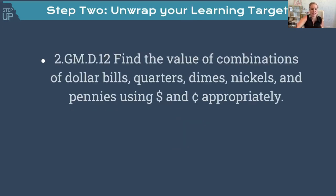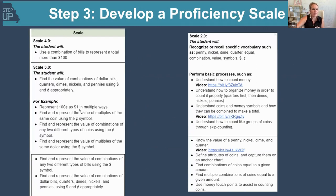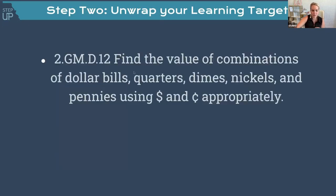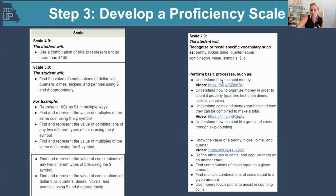Now we need to unwrap this standard. An example: you can represent 100 cents in multiple ways; you can represent the values of multiple of the same coin using the symbol sign. Teachers have to unwrap all the different cognitive skills a student needs to master this concept. When we think about the value combination of dollar bills, you've got to know what a dollar is and that it's worth a hundred cents. You have to know quarters, dimes, nickels, and pennies — kids confuse dimes and nickels. They're going to need to know coin value, how to skip count, and when to use the dollar sign.